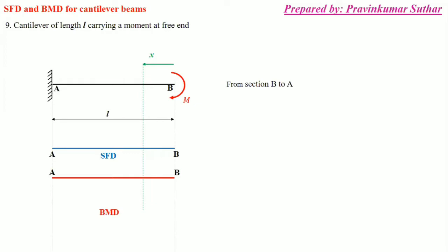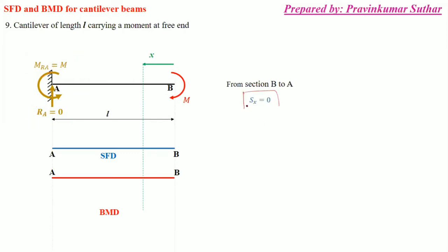As you can see, the support reaction is equal to zero, because due to this moment there are no vertical forces — only a pure moment is there. So the vertical support reaction RA is equal to zero. The resisting moment at the support will be equal to M. The shear force will also be equal to zero throughout, since there is no vertical load in this case.